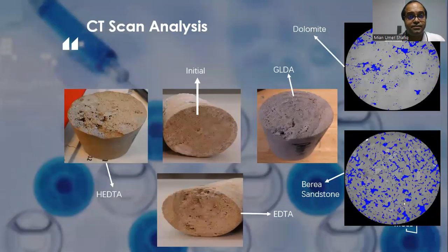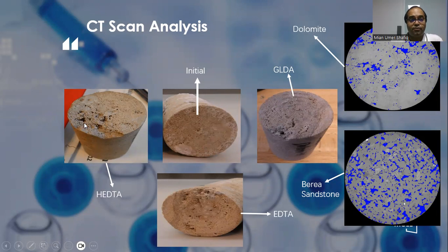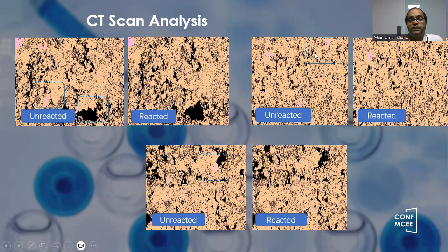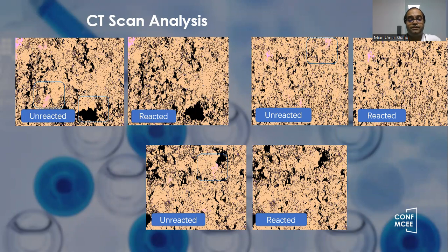Finally, the CT scan analysis. This is the initial sample. After reaction for GLDA, HEDTA, and HEDTA, you can see the new channels — pores or wormholes — have been created. This is confirmed by these pictures. The pink markings show different minerals present inside. In the unreacted sample, you can see some minerals, but in the reacted samples, the minerals are dissolved. These are the samples of the Gulf dolomite, and it shows that the Gulf dolomite minerals have been dissolved as well by these chelating agents.